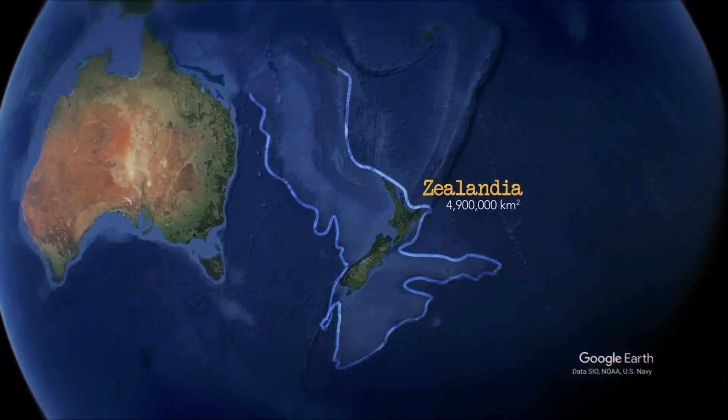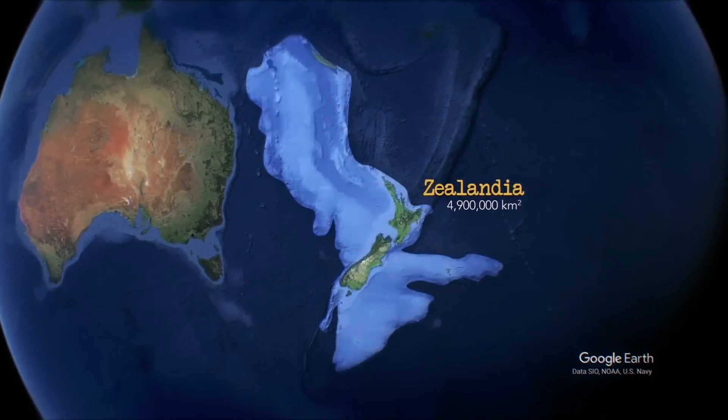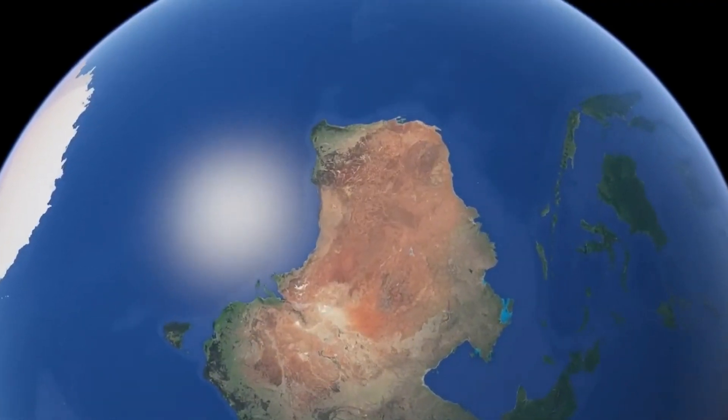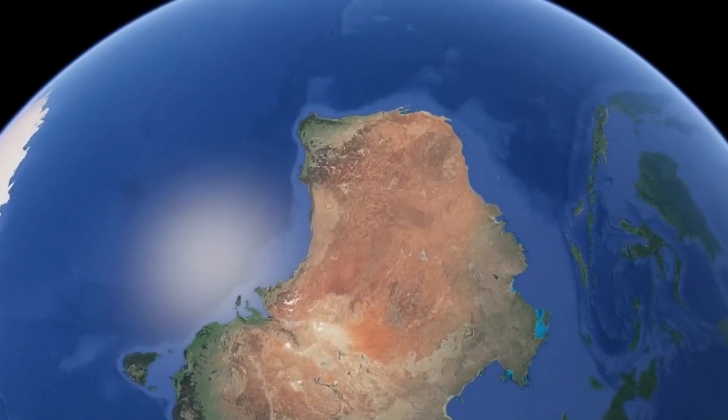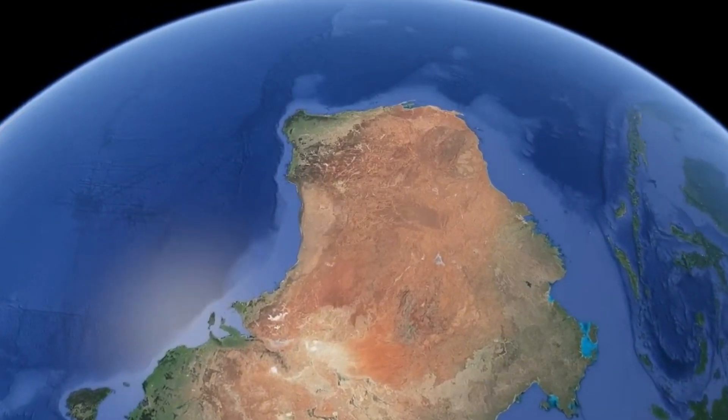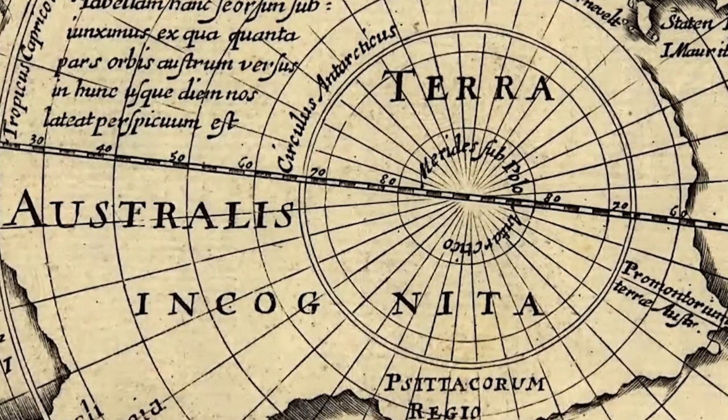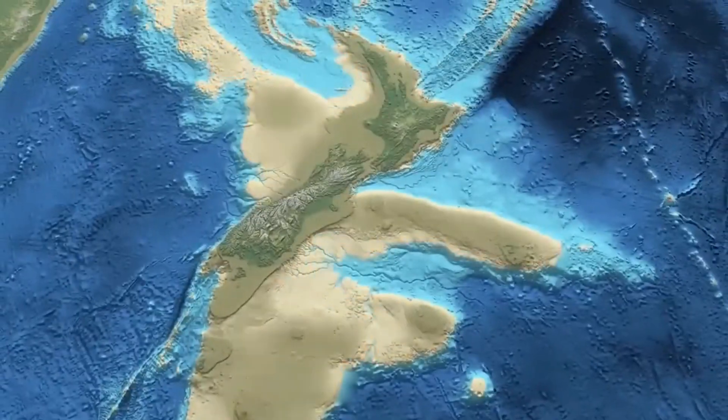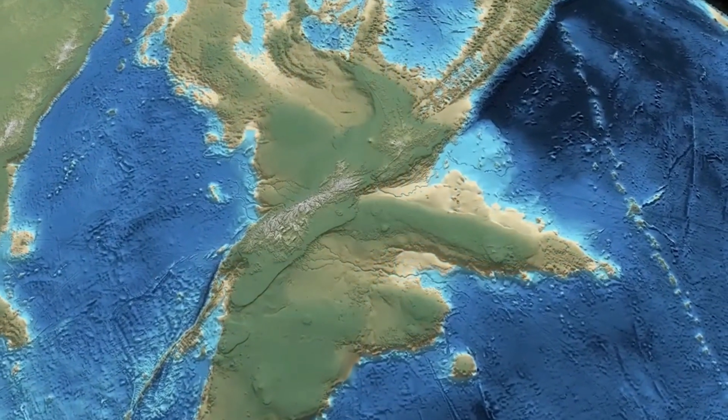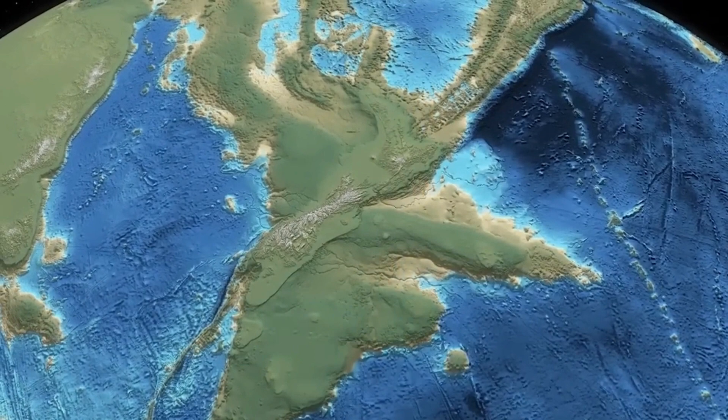Australia had already been discovered by this point, but the Europeans thought it was not the legendary continent they were looking for. When they changed their minds, it was later given the name Terra Australis. With a total area of 1.89 million square miles, 4.9 million square kilometers, it is about six times the size of Madagascar.